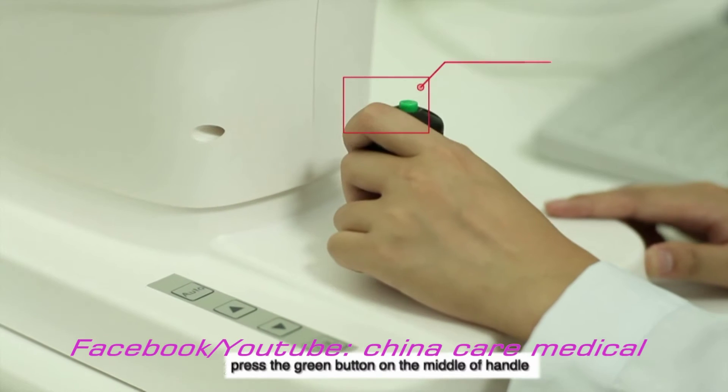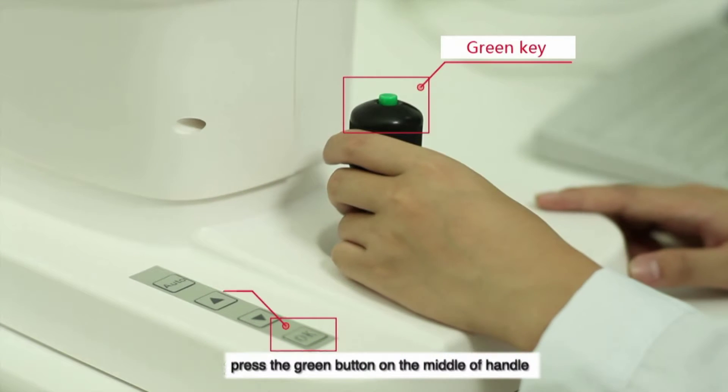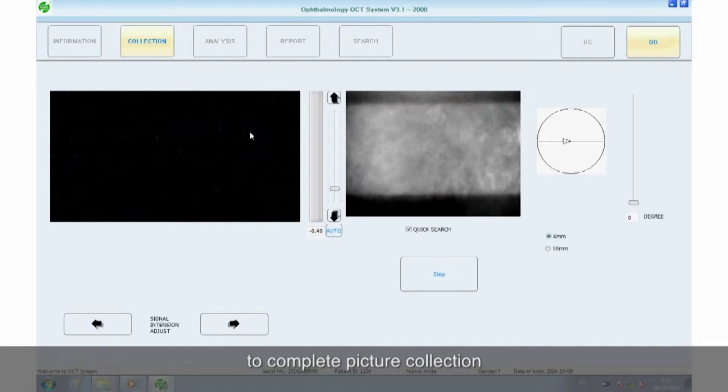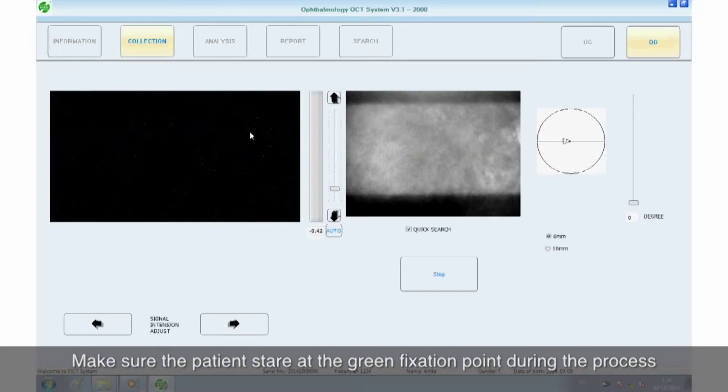Step 4: Press the green button on the middle of handle or OK button to complete picture collection. Make sure the patient stares at the green fixation point during the process.